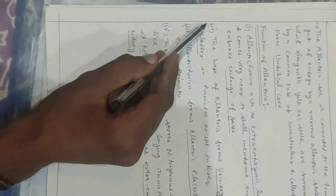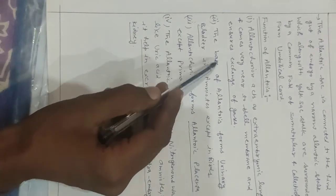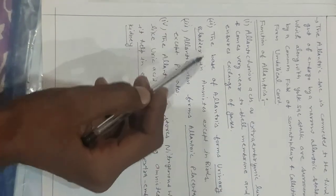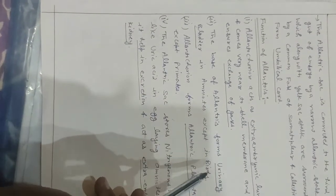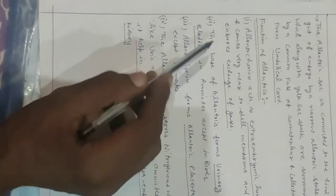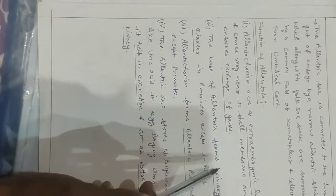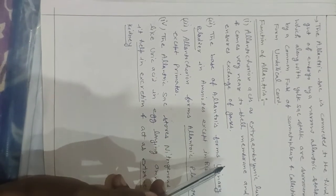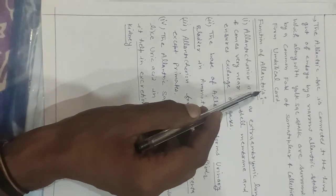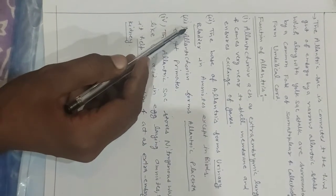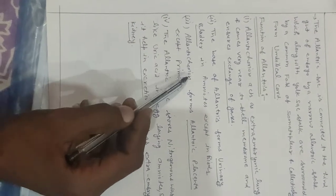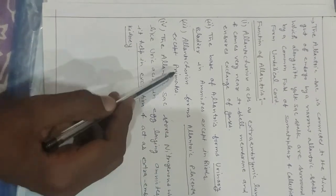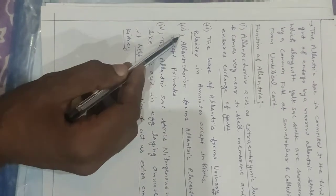The second function of allantois: the base of allantois forms the urinary bladder in amniotes except birds, helping in embryonic excretion. The third function: allanto-chorion forms the allantoic placenta except in primates.